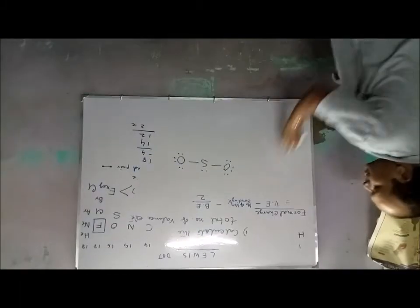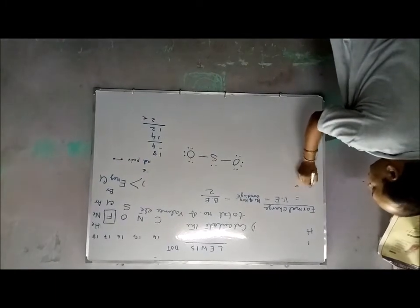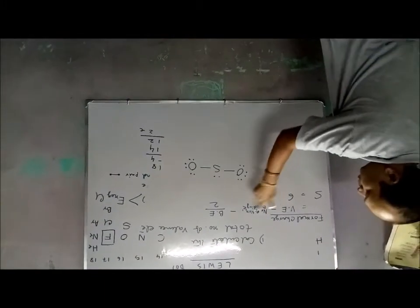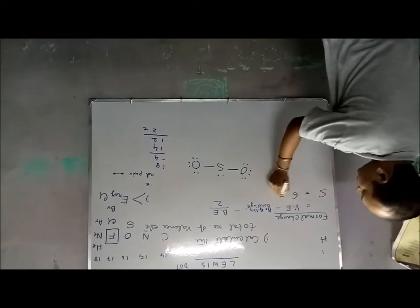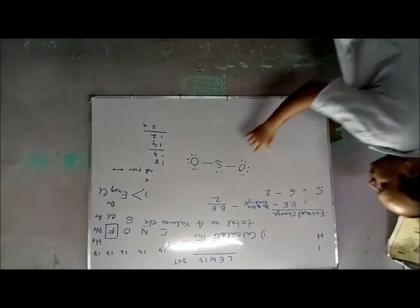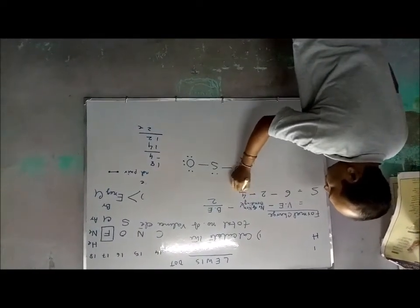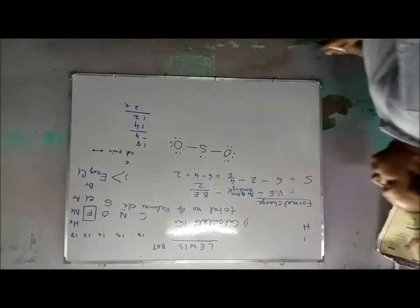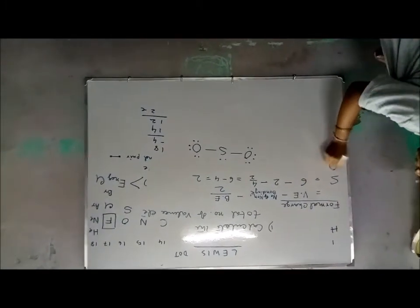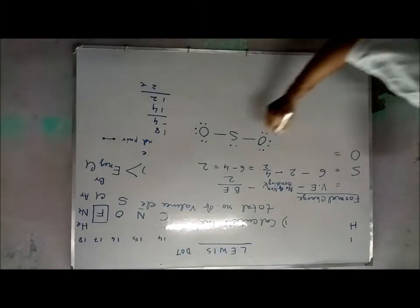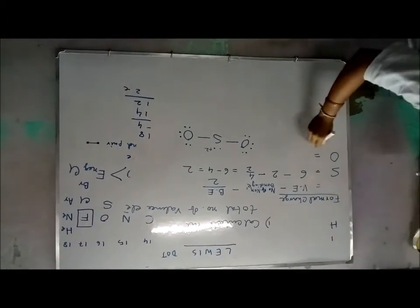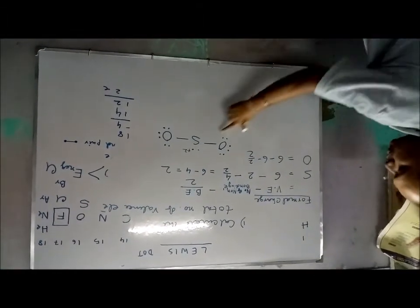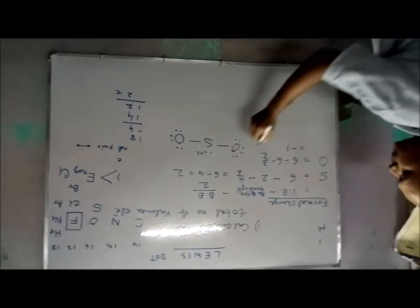For sulfur: valence electrons = 6, non-bonding electrons = 2, bonding electrons = 4. So formal charge = 6 − 2 − (4/2) = 6 − 2 − 2 = +2. For each oxygen: valence electrons = 6, non-bonding electrons = 6, bonding electrons = 2. So formal charge = 6 − 6 − (2/2) = −1.